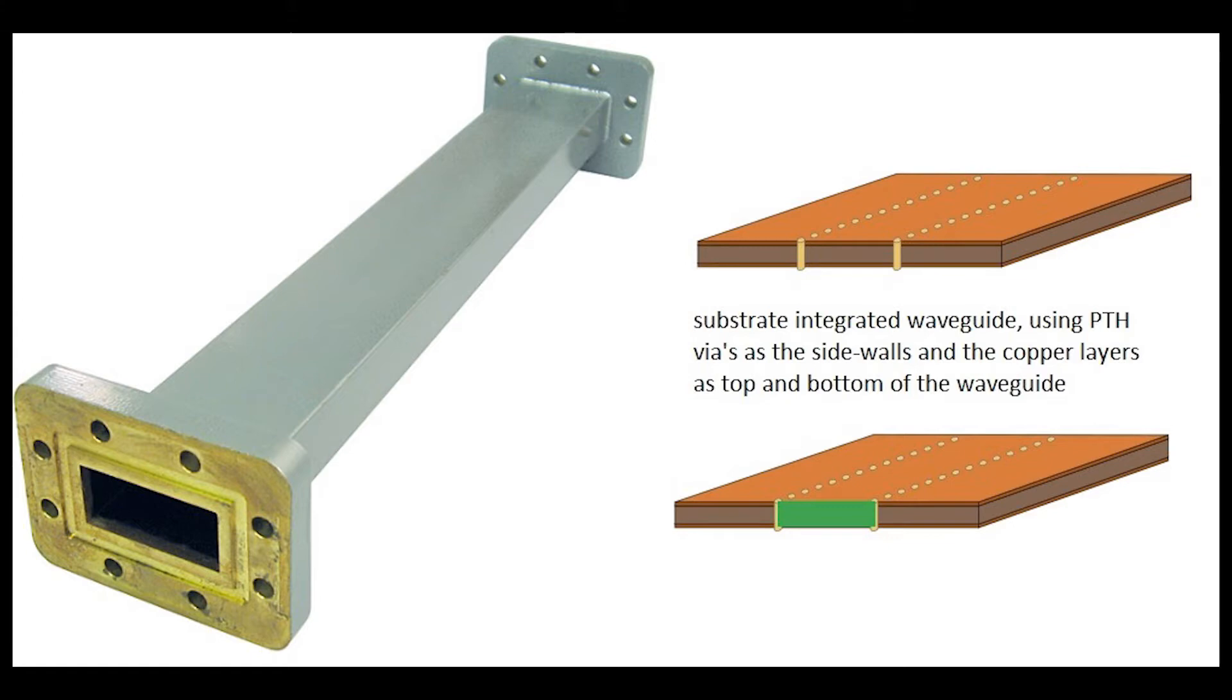And then the sidewalls of the SIW or the sidewalls of the rectangular waveguide for a printed circuit board are the plated through hole vias. And these vias, when they're stitched together very closely, they will act like a solid wall at a certain frequency.